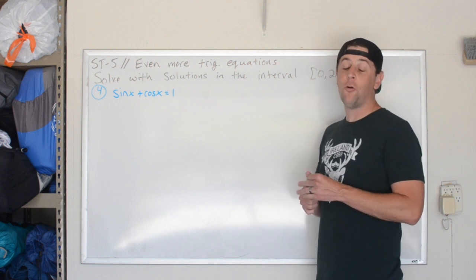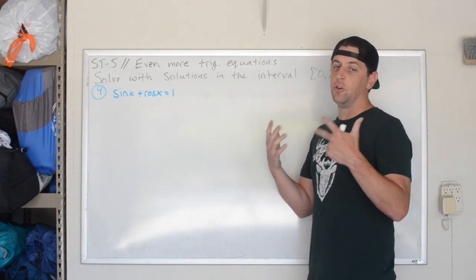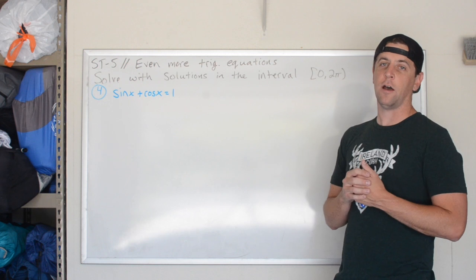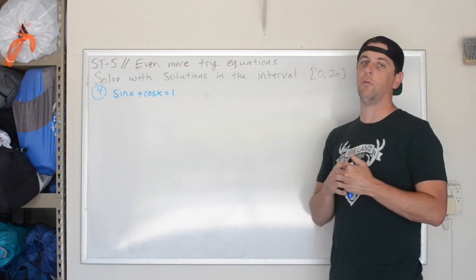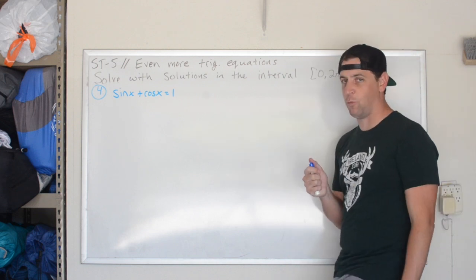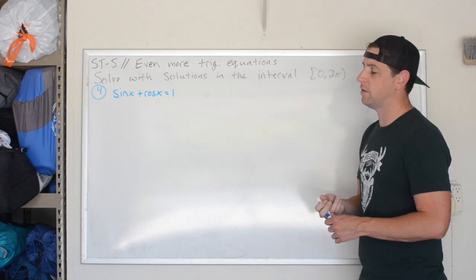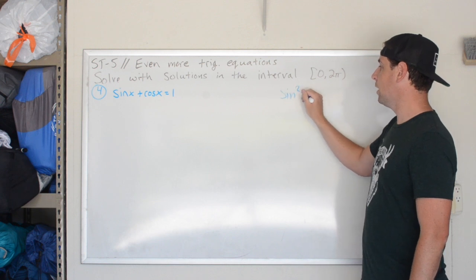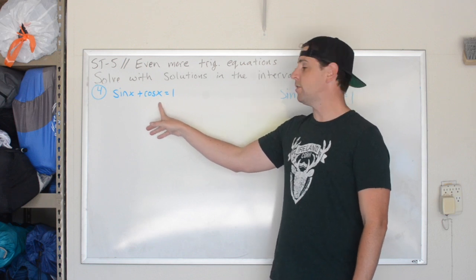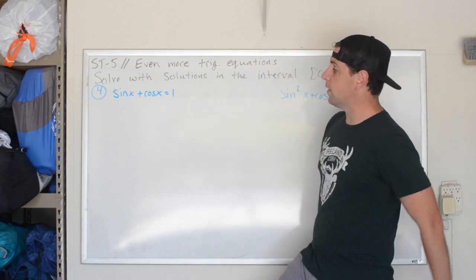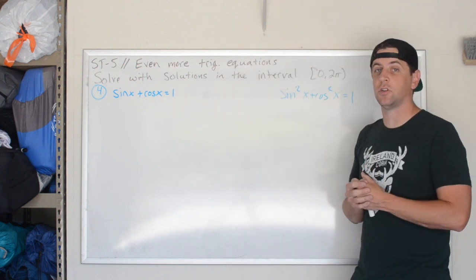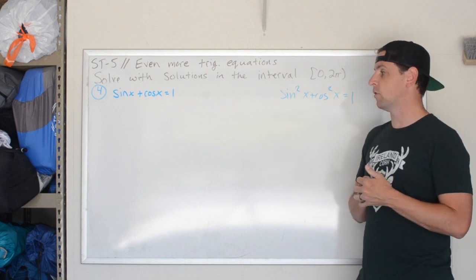We're on to our fourth and final problem: sine of x plus cosine of x equals 1. This looks close to the Pythagorean identity but it's not — the Pythagorean identity is sine squared x plus cosine squared x equals 1, and these aren't squared. Subtracting 1 and setting equal to 0 won't be factorable, and we have no good way to use a double angle formula here. So we need a new strategy.